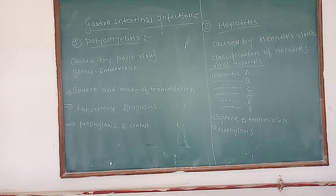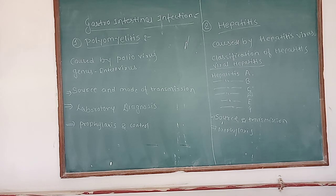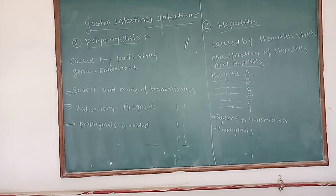The second type of viral hepatitis is transmitted mainly by inoculation and was originally observed in persons receiving serum inoculation or blood transfusion. It has been known by several names such as homologous serum jaundice and serum hepatitis, and is currently called type B hepatitis.